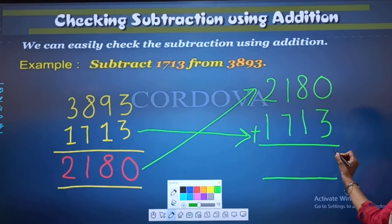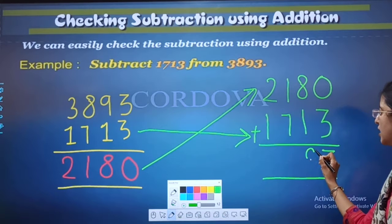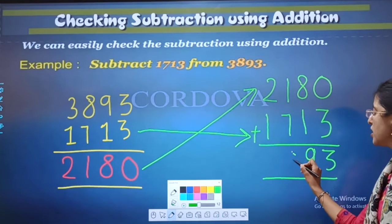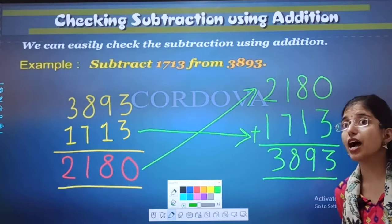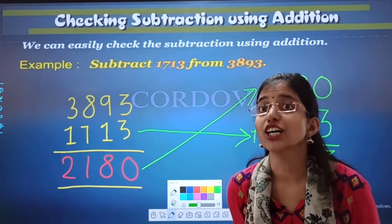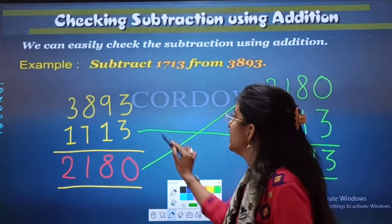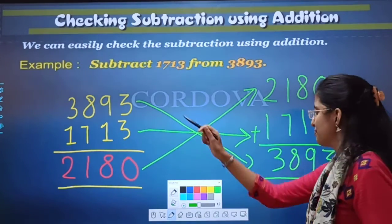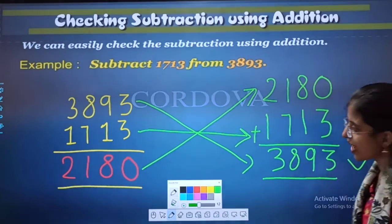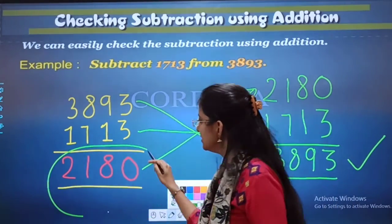So, 3 plus 0 is 3. 8 plus 1 is 9. 7 plus 1 is 8. And 2 plus 1 is 3. And you have noticed something. Did you notice something? That 3893 we got here. Now, it means our answer is correct. This answer is correct.